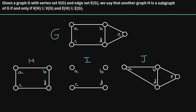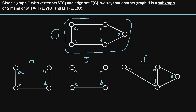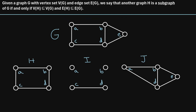As a little extra practice, let's consider this graph right here, G. It has five vertices labeled A, B, C, D, and E. Let's check if each of these graphs — H, I, and J — are subgraphs of G or not.